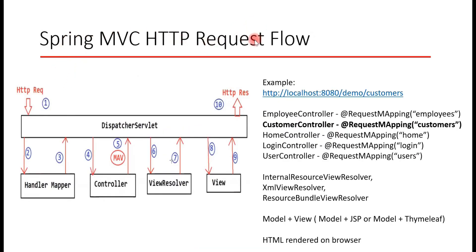Let's understand step by step how Spring MVC framework works. Whenever we hit a URL in a browser, the request first comes to the DispatcherServlet. For example, if we hit this URL in a browser, the request first comes to the DispatcherServlet — this is the first step. In our application, we may have a lot of controllers like EmployeeController, CustomerController, HomeController, LoginController, and the DispatcherServlet doesn't know which controller will need to process the request.